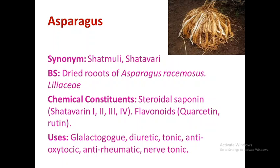The different steroidal saponins present in asparagus are shatavarin 1, shatavarin 2, shatavarin 3, and shatavarin 4. It also contains the flavonoids quercetin and rutin. Asparagus is used as a galactogogue, diuretic, tonic, anti-oxytocic, anti-rheumatic, and nerve tonic.